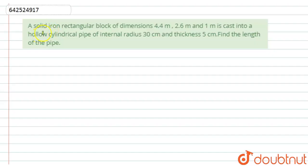Hello student, let's start with the question. Here we have given a solid iron rectangular block of dimension 4.4 meter, 2.6 meter, and 1 meter, is cast into a hollow cylindrical pipe of internal radius 30 cm and thickness of 5 cm. Find the length of the pipe.